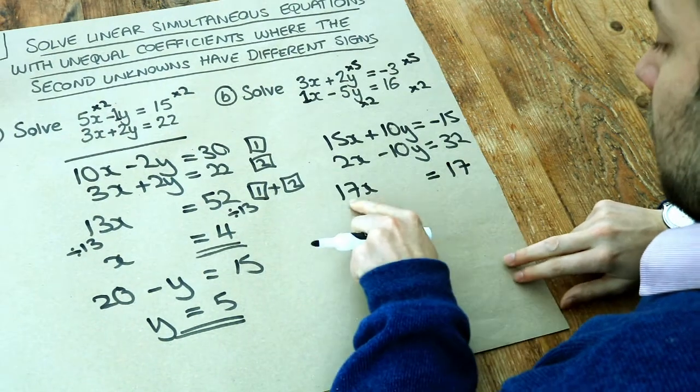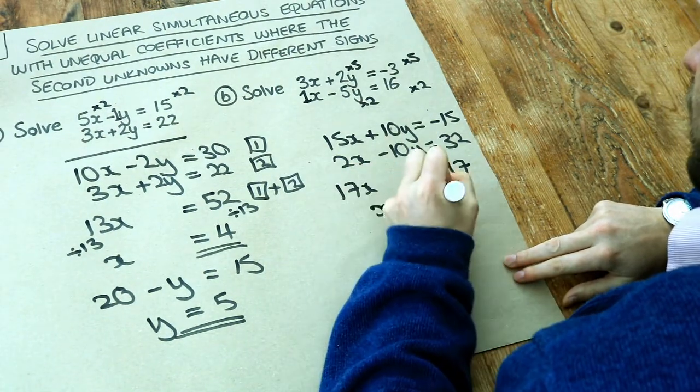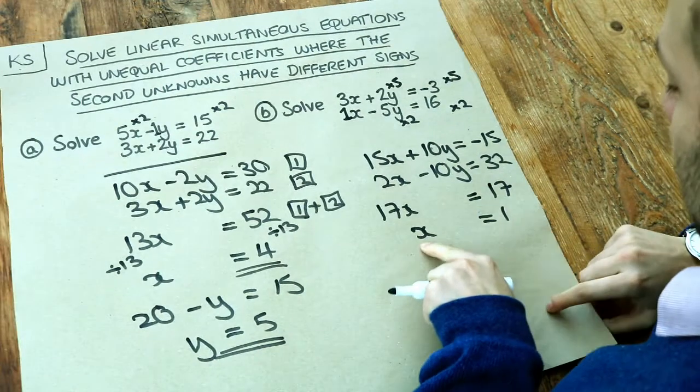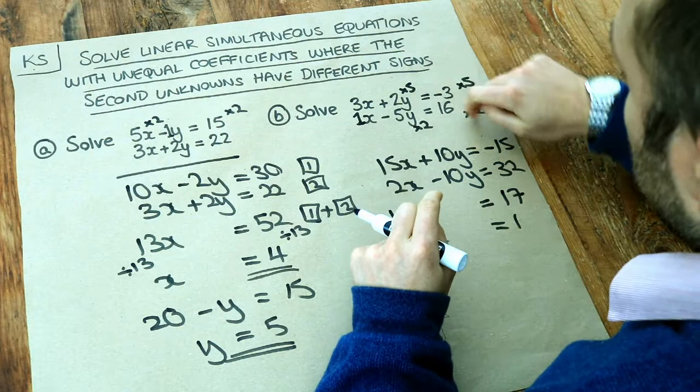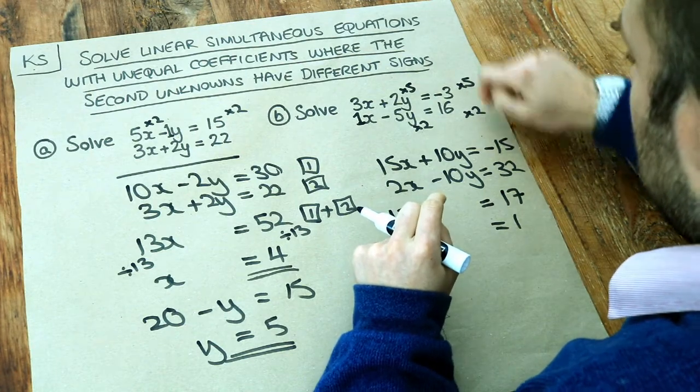And, well, 17 times x is 17, well, x is just 1. And as before, we substitute that x value of 1, or it could be a y value we found, back into one of these original equations. I'm just going to choose the first equation.